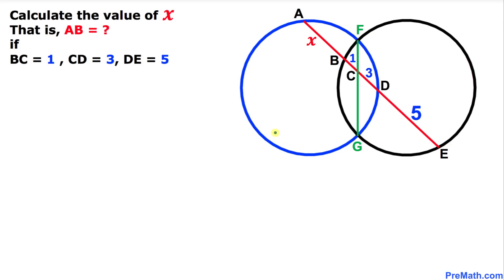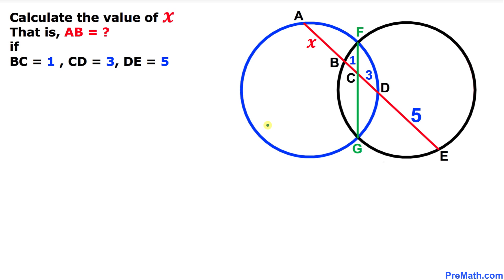Welcome to pre-math. In this video tutorial we have got two identical circles — one is blue and the other is black — and they intersect each other at two points F and G. We are going to calculate the value of x, in other words the distance AB, given that line segment BC is 1, CD is 3, and DE is 5.